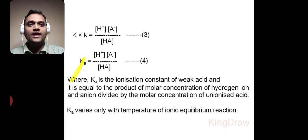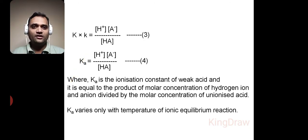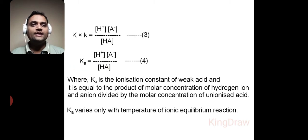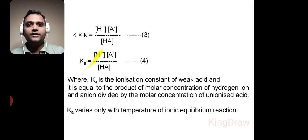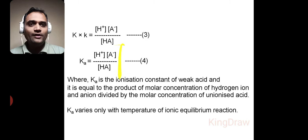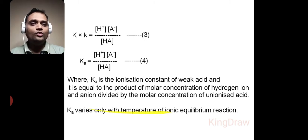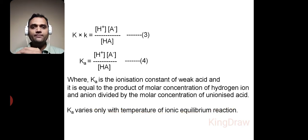Here Ka is the ionization constant of the weak acid. Ka is equal to the product of the molar concentration of hydrogen ion and the anion, divided by the molar concentration of the unionized acid. The value of Ka varies only with the temperature of the ionic equilibrium reaction.